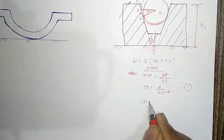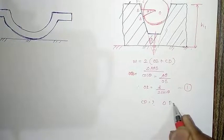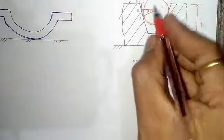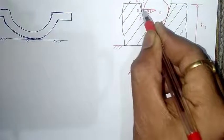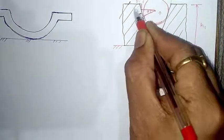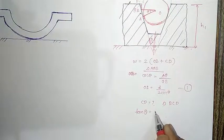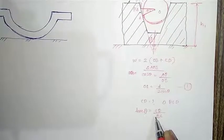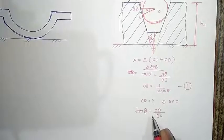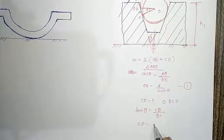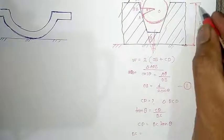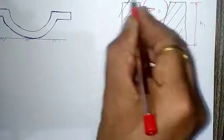Then we should find CD. CD can be found from triangle BCD. This angle is θ, and since this line is perpendicular to this line and this line is perpendicular to that line, this small angle is also equal to θ. So apply tan θ = CD divided by BC. Therefore, CD = BC × tan θ. We will take one more measurement on the top of the sphere with the height gauge and call that H2.